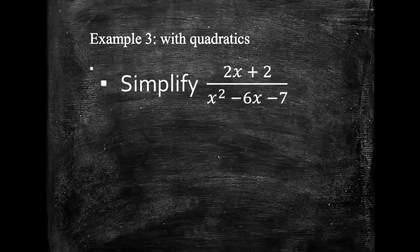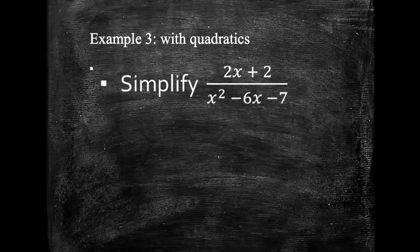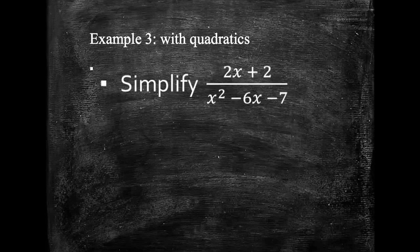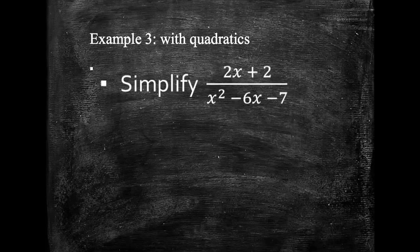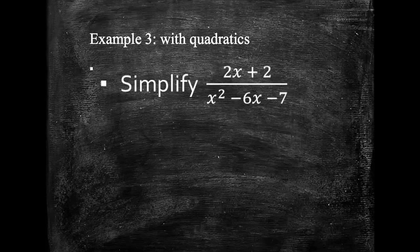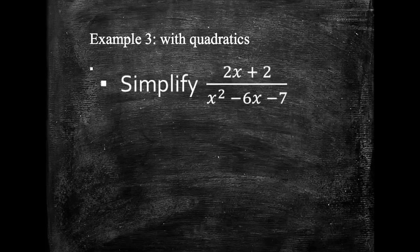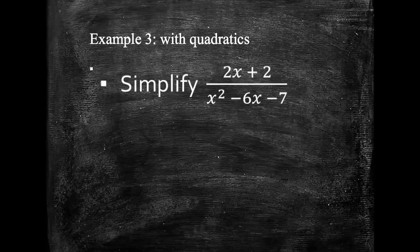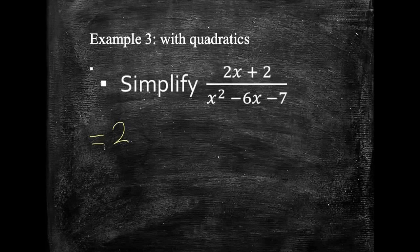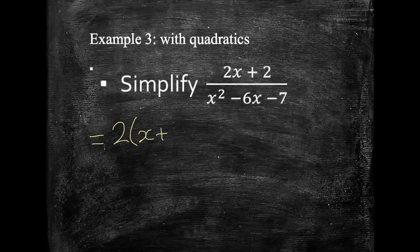Let's look at this example then. This time I've got a linear term at the top, 2x plus 2, and a quadratic term at the bottom of my fraction, x squared minus 6x minus 7. So, I'm still going to have to factorise this. Let's think about it step by step. Think about the top, what goes into 2x plus 2. Well, 2 does. Let's take a common factor of 2 out. So, we've now got 2 lots of x plus 1.